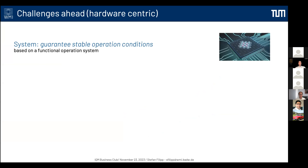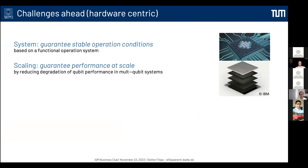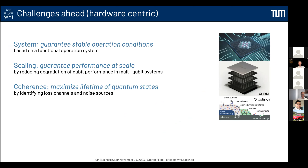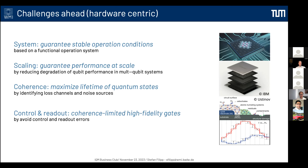The challenges are: first, building a stable operating system out of these qubits — not just having a few but running a stable system. Second, scaling up while guaranteeing that when building systems with hundreds, thousands, or millions of qubits, performance doesn't degrade. Third, maximizing coherence — the lifetime of quantum states — by identifying noise channels and loss sources. And fourth, avoiding control and readout errors to get high fidelity gates limited only by coherence.